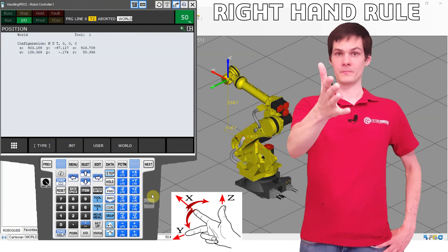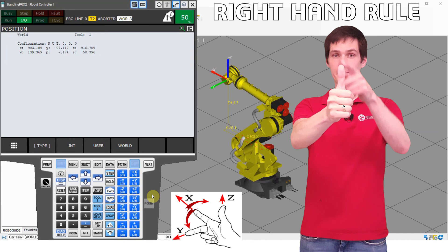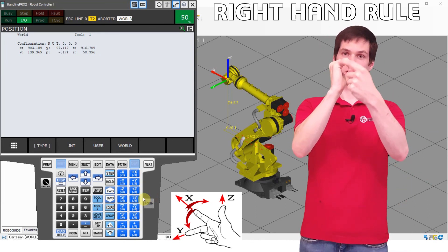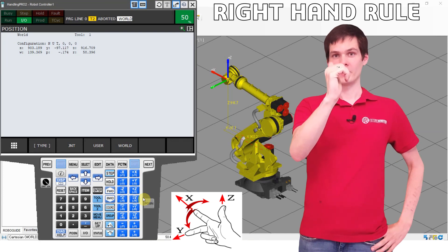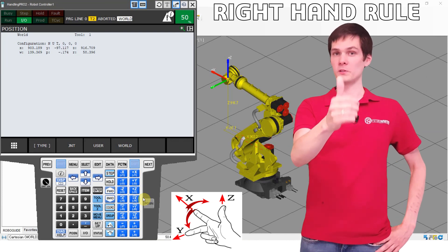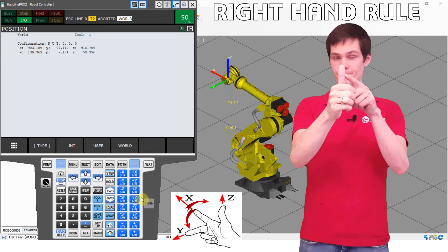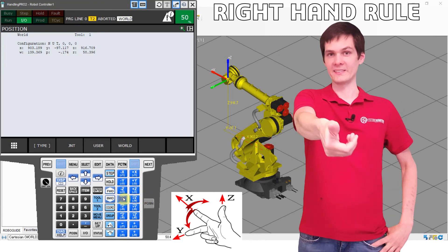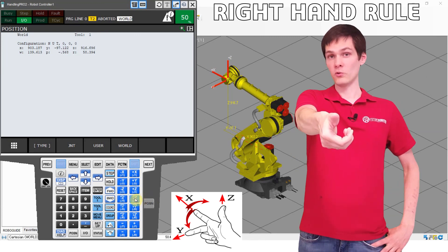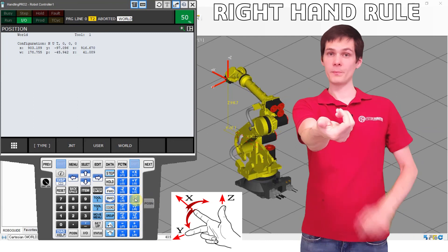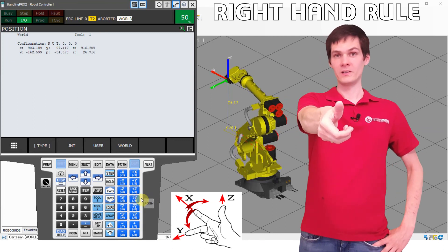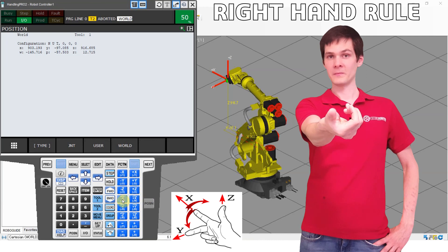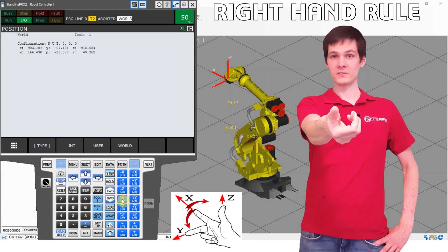Now if you want to know which way is positive, which way is negative, just point your thumb in the axis you want to jog. So we want to jog the x axis and you want to move positive. That's the arrow showing the positive direction. So when you jog into the x positive, that's how it is going to move. When you move negative, it's going to move the other way.